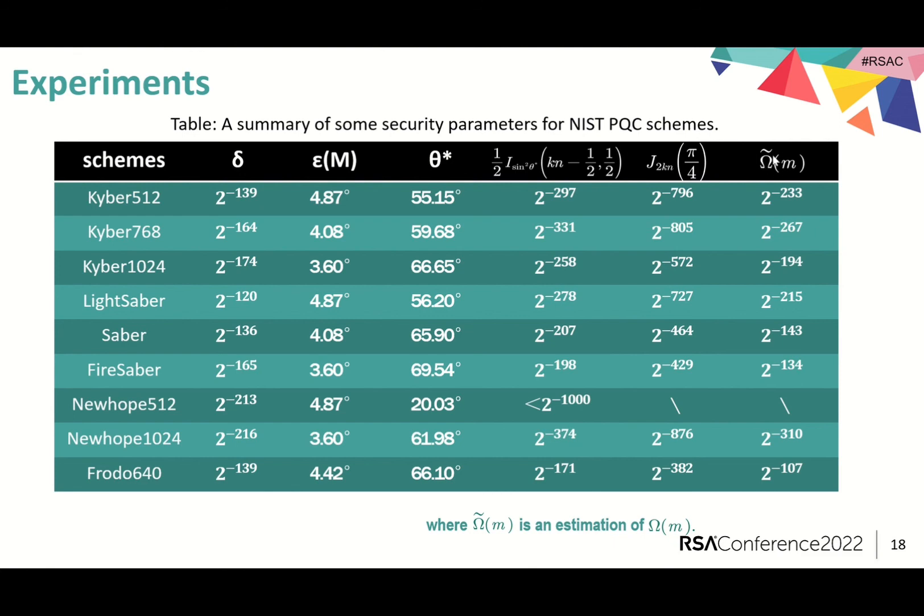So, omega_{2}(m) is a sufficiently accurate estimation. As for NewHope512, since it satisfies 2 theta star is smaller than pi over 2 minus epsilon_m, the proportion of excluded key candidates is no less than m times I with overwhelming probability.